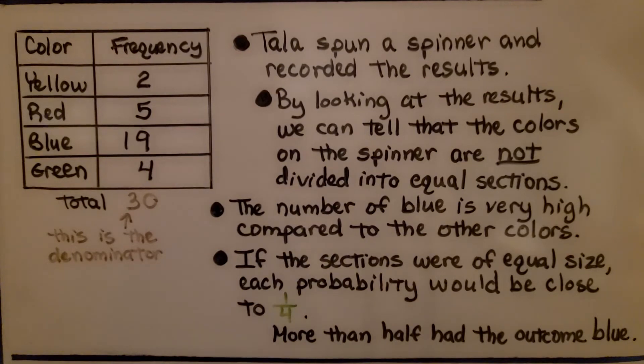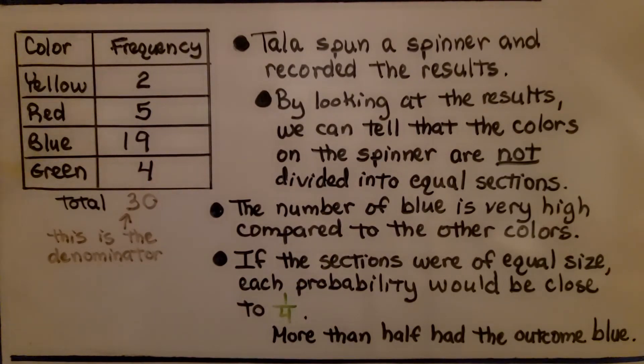I want to show you one more quick thing before we finish. You can see we have a table here of color and frequency, and we've got two for yellow, five for red, 19 for blue, and four for green. So Tala spun a spinner and recorded the results, and by looking at the results we can tell that the colors on the spinner are not divided into equal sections. The number of blue is very high compared to the other colors.